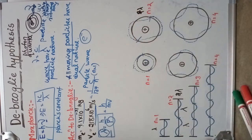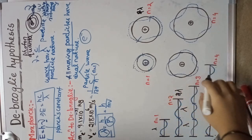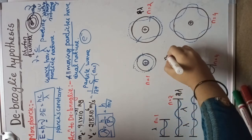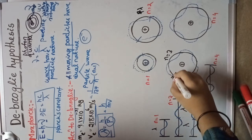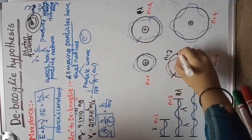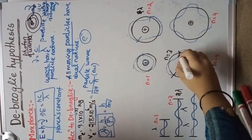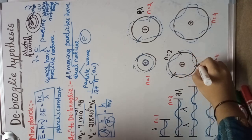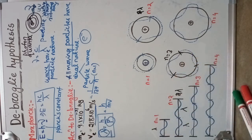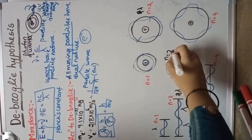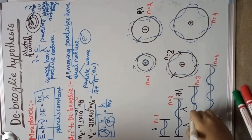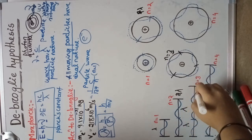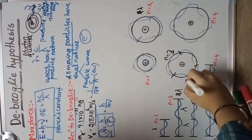In the third orbit, n equals to 3, from this point to this point — one wave, second wave, and this is the third wave. So in the third orbit it exhibits three waves, and the total wavelength is three lambda.